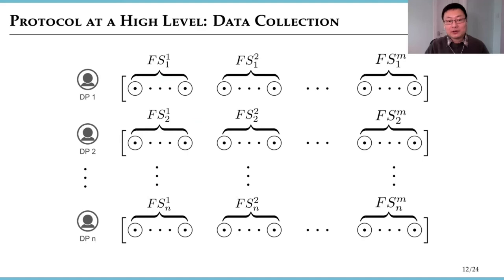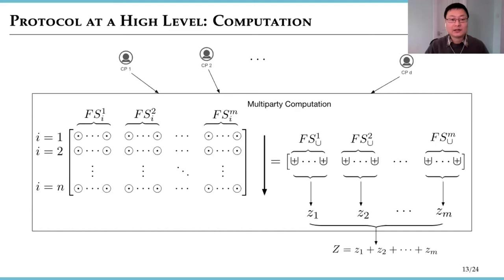We build a protocol around FM sketches. It works in this way. There are n parties. Each has a set and they share m different hash functions. For each party, they use their local sets to build m different FM sketches. Then the sketches are split into secret shares and the shares are sent to the computation party. The computation party then uses the secret shares as the inputs to run an MPC protocol.